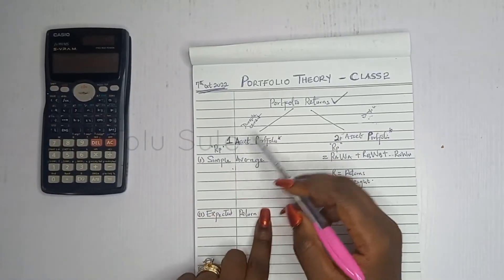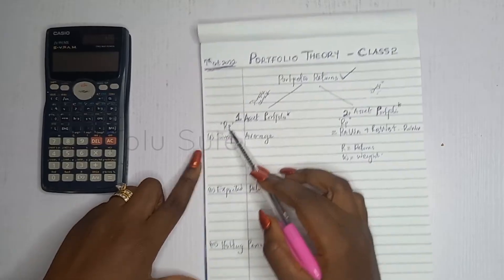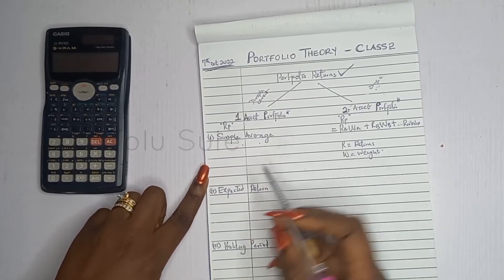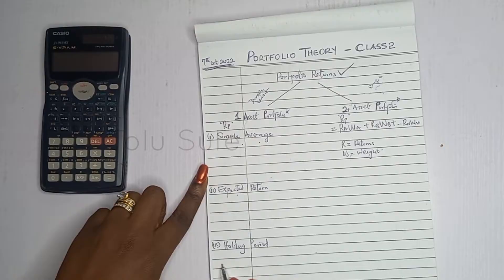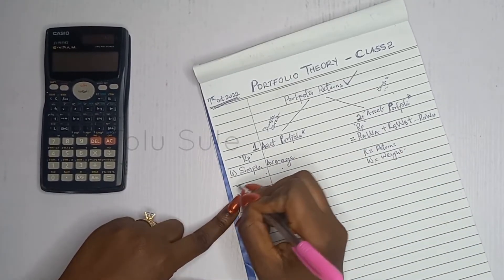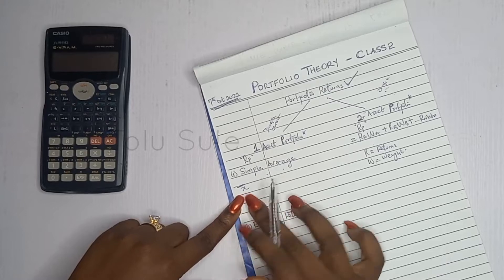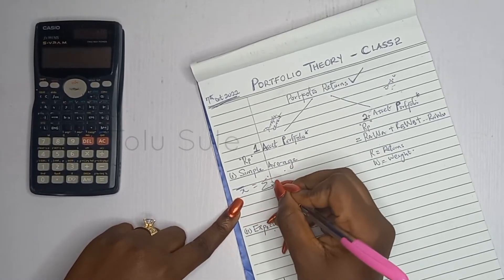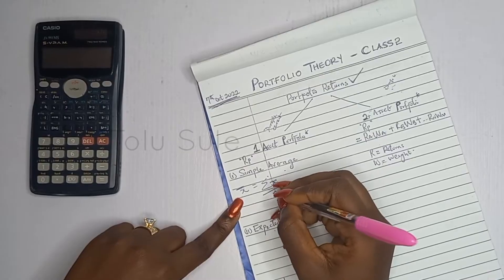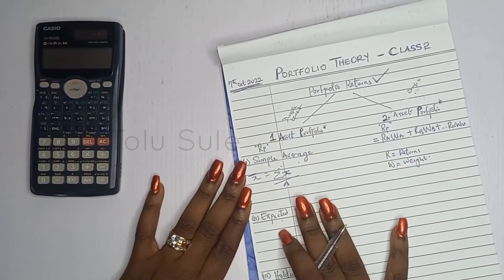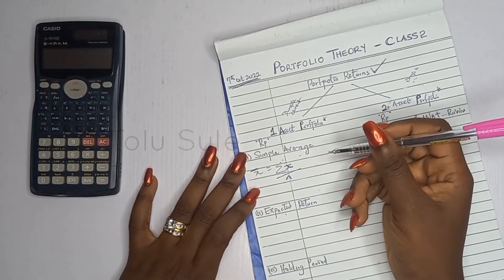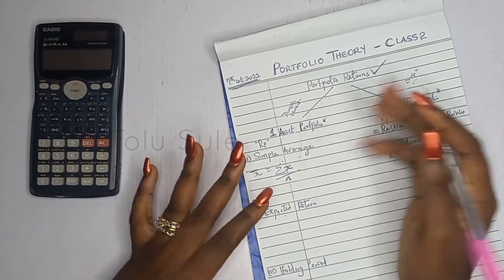To calculate your portfolio return on a one asset portfolio, you have three approaches: the simple average, expected return, and the holding period method. The simple average tells you that your portfolio return — denoted as x-bar — is a summation of the historical returns over n. Basically, you're finding the mathematical mean.